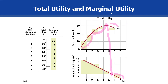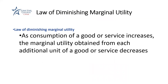We call this decline in marginal utility when we consume more and more of something the law of diminishing marginal utility. As you consume or eat more and more, your marginal utility is going to go down — that's called the law of diminishing marginal utility.